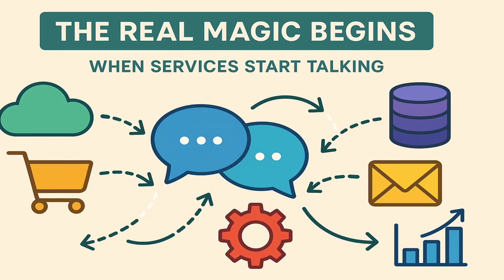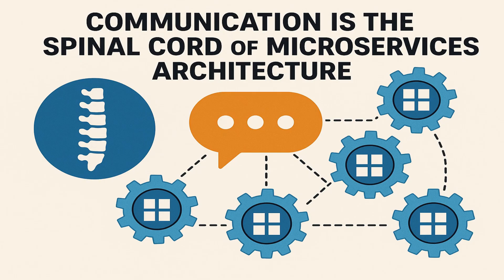If the communication between services is not correct, then even the best architected services are useless. We can say communication is the spinal cord of microservices architecture. If its design is weak, it will make the entire system lag.